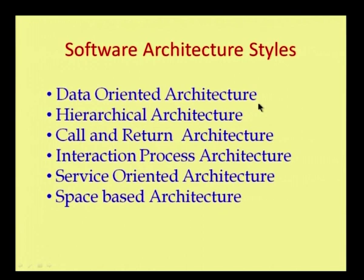The architectural styles include: data-oriented architecture, where the main concern is data flow; hierarchical architecture, with two-layer or three-layer structures; call and return architecture, where a function is called and returns a result; interaction process architecture, where input is given based on need and output is produced accordingly; service-oriented architecture, which is the main focus today; and space-based architecture, which some applications use but is not very popular.